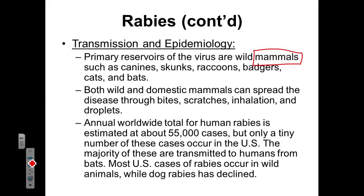Worldwide, the total number of human rabies cases is approximately 55,000. But a very tiny number of those cases occur within the United States. The majority of those cases transmitted to humans in the United States come from bats. Every once in a while, rabies will occur in wild animals. Within dogs, rabies has been vastly declining because getting vaccinated against rabies is part of the regimen when you bring your dog to the vet.